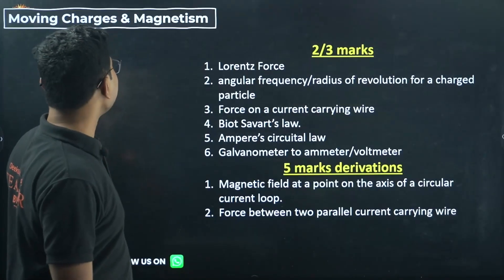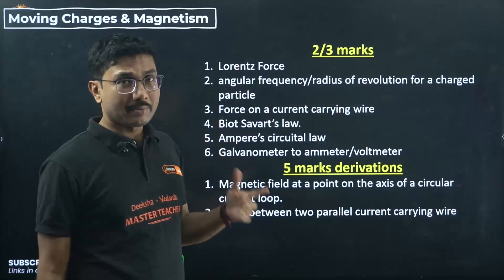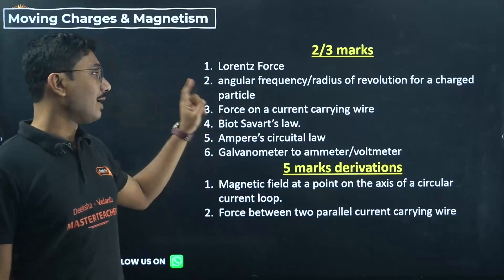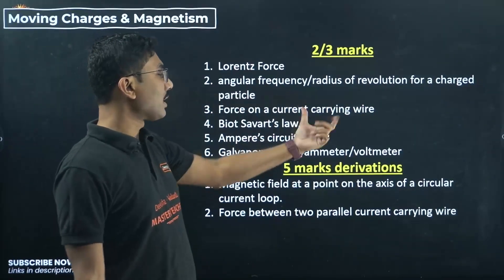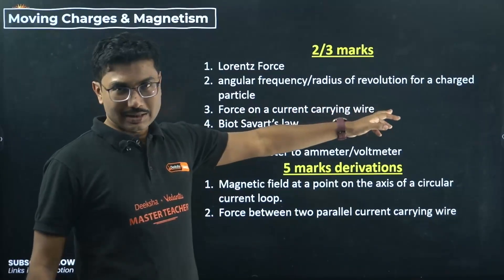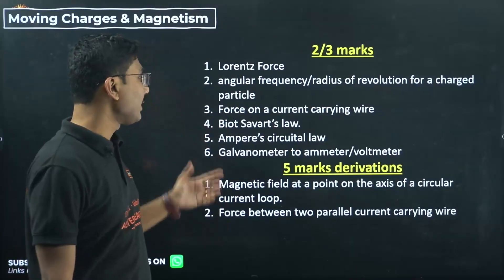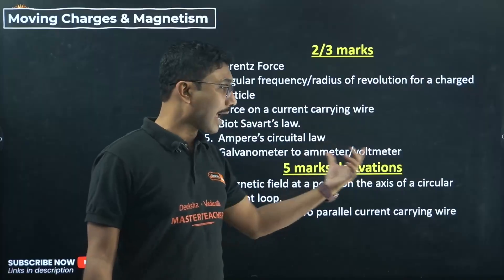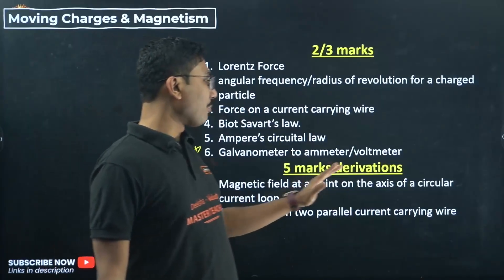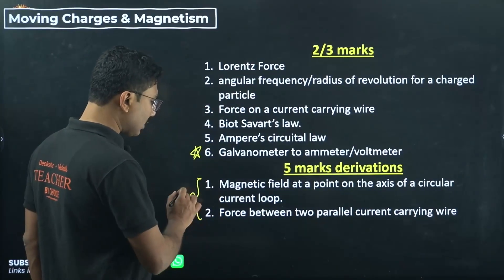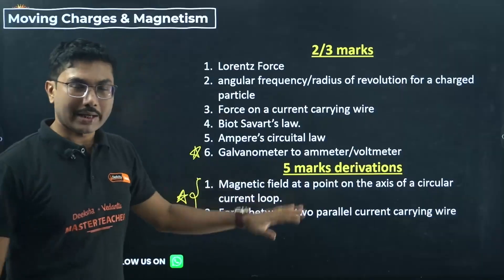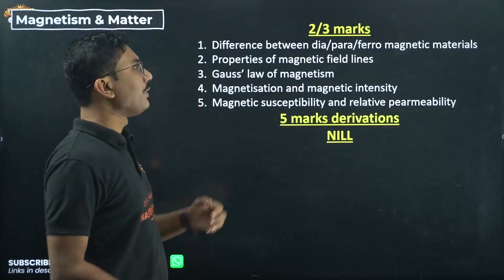Next chapter: Moving Charges and Magnetism — another important chapter with 10 to 11 marks. Important topics: Lorentz force, angular frequency, radius of revolution for a charged particle; force on a current-carrying wire (F = BIL sinθ); Biot-Savart's law; Ampere's circuital law. Conversion of galvanometer to ammeter and galvanometer to voltmeter — a very important question. Magnetic field at a point on the axis of a circular current loop, and force between two parallel current-carrying wires — at least one of these derivations will definitely come.